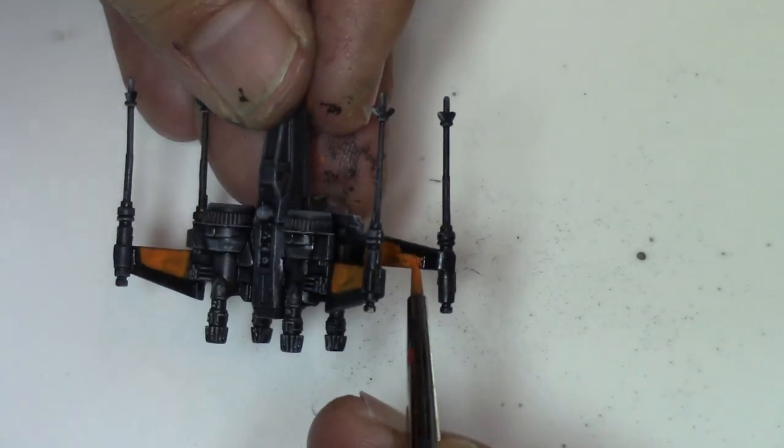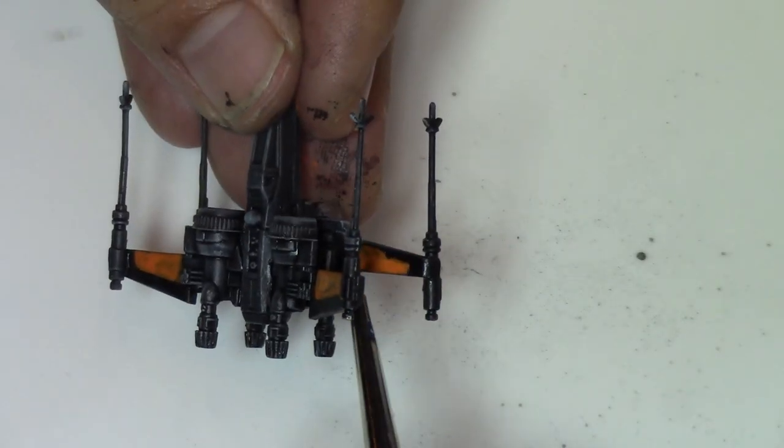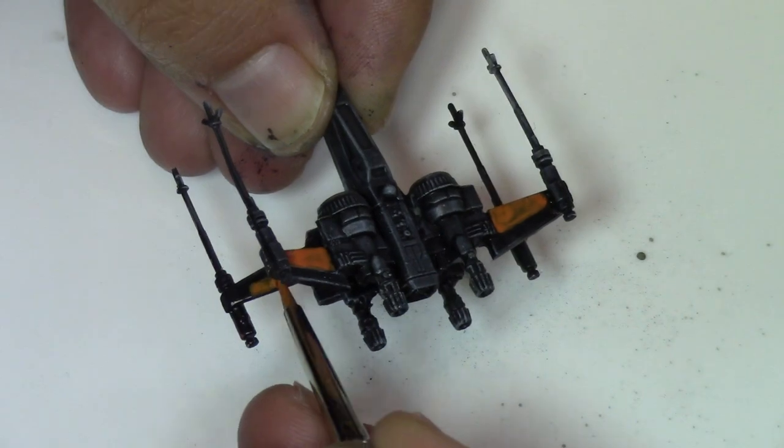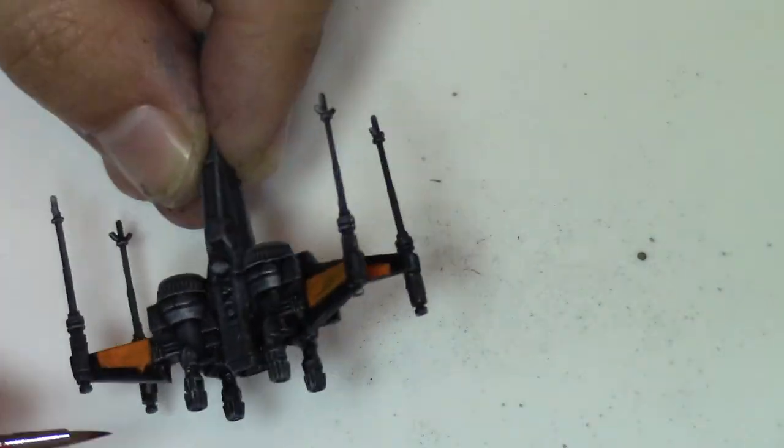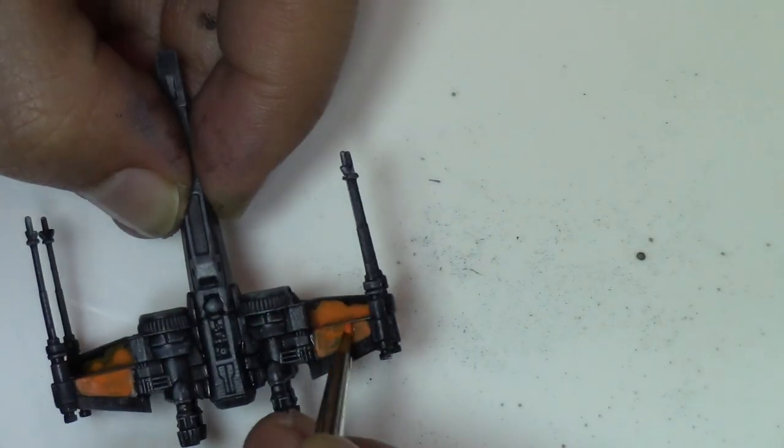You may have to do multiple coats and just paint it on the wings and on the undersides too.